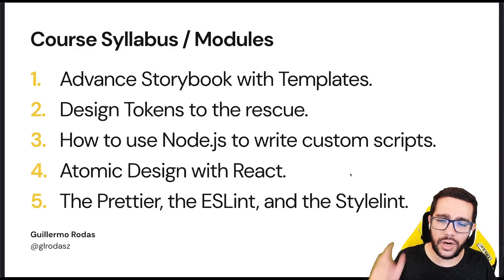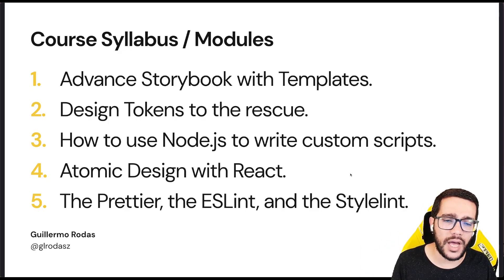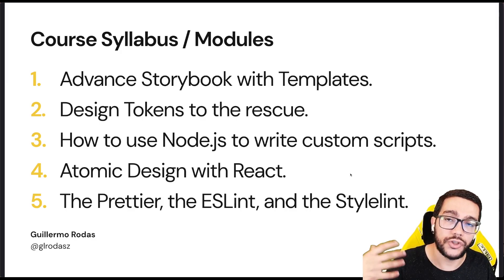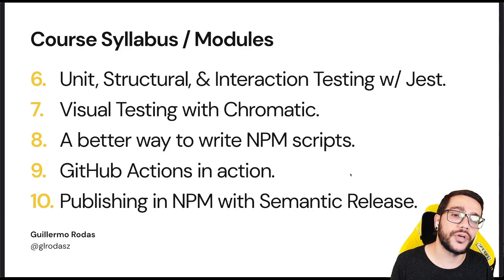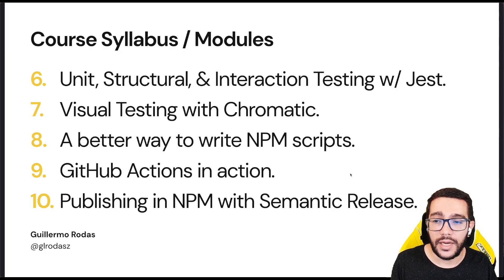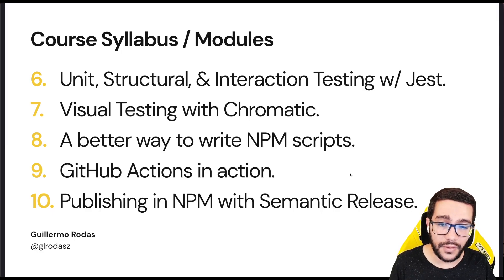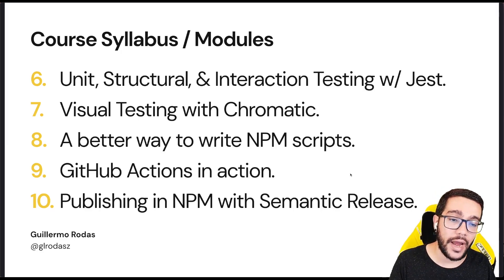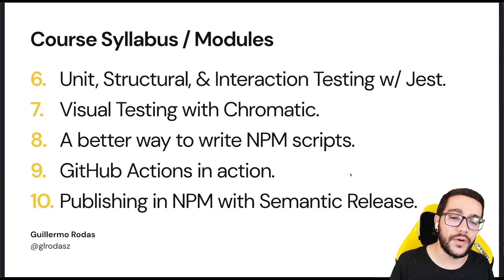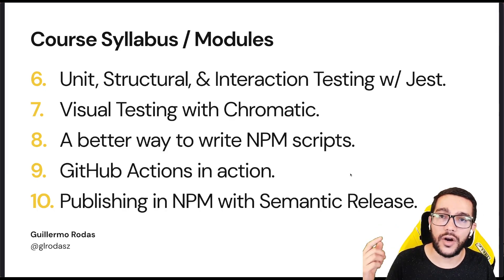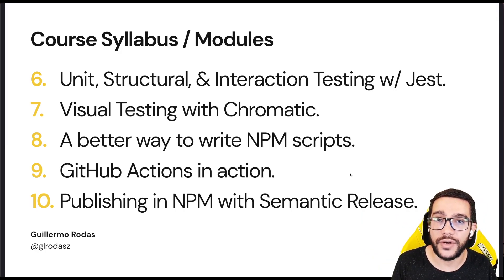In the fourth module, we will talk about atomic design with React. In the fifth, we will be talking about Prettier and ESLint — these tools will help us have better code. In the sixth, we will do unit, structural, and interaction testing with Jest. In the seventh, we will do visual testing with Chromatic. In the eighth, we will look at a better way to write NPM scripts, because when you have a very advanced project you might end up with a lot of scripts.